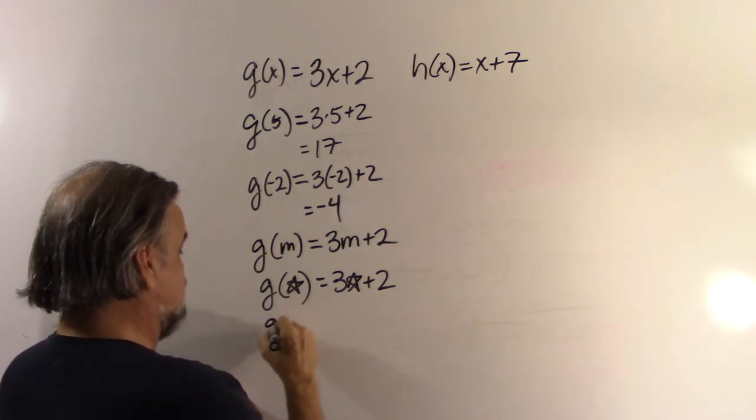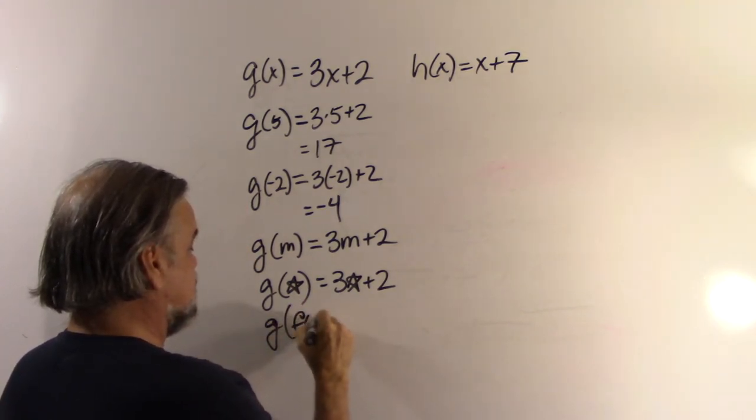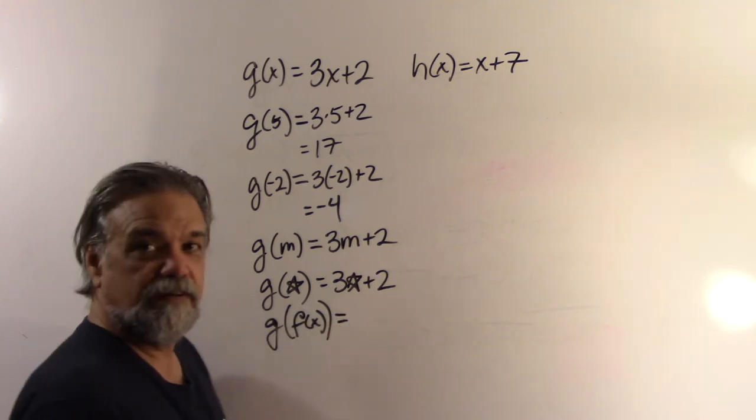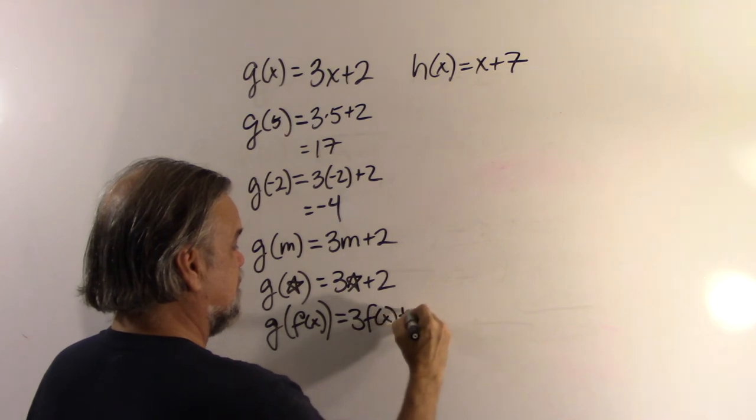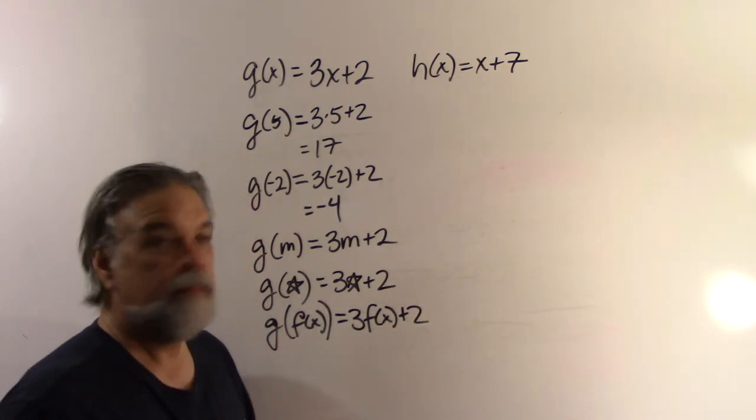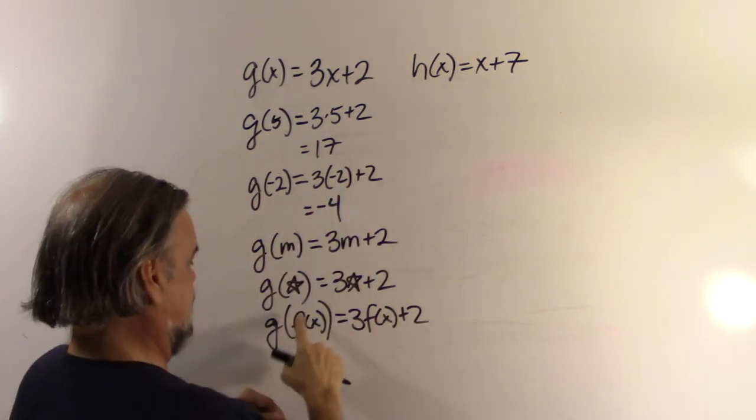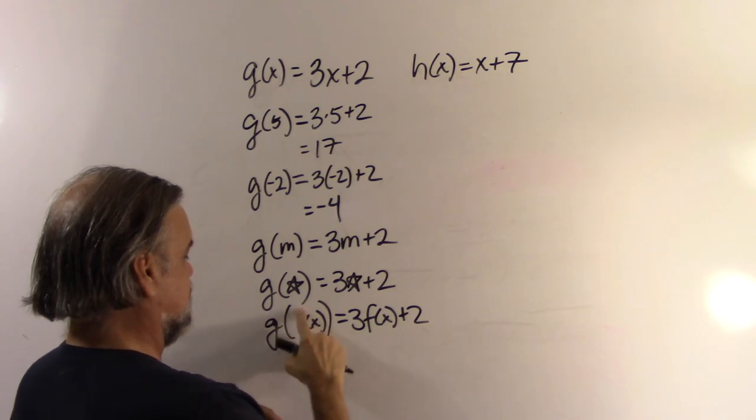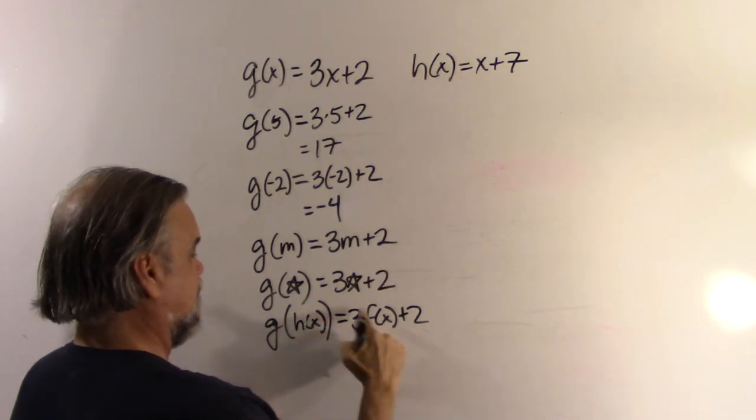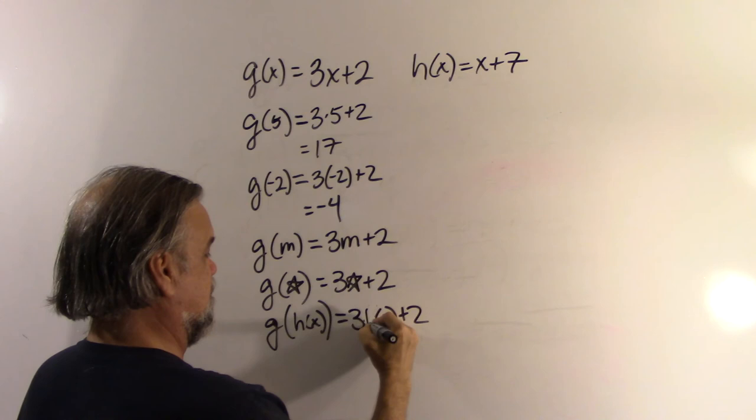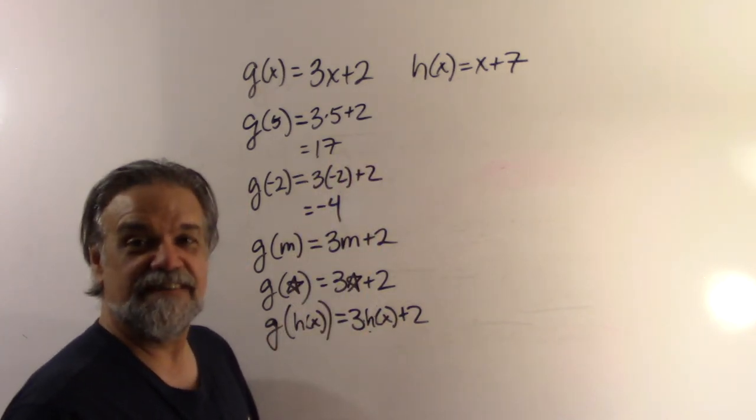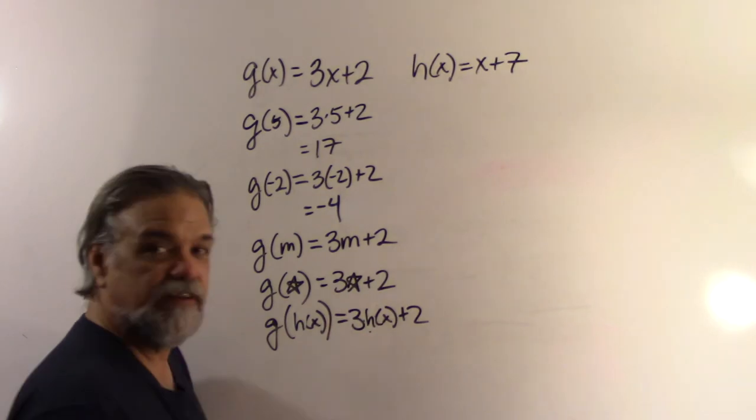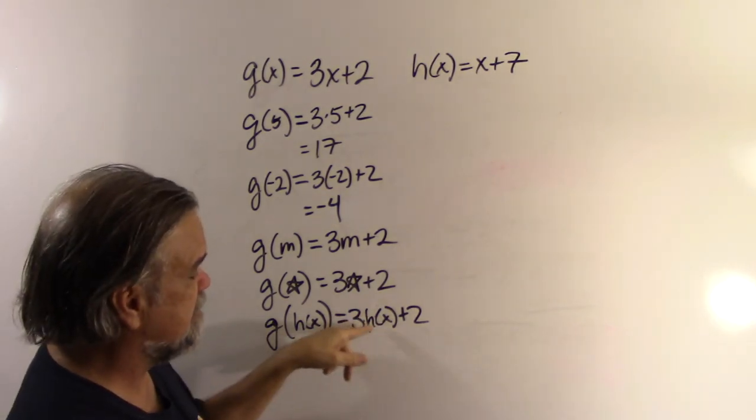And if I had g(h(x)), well, I would have 3 times h(x) plus 2. Oh, but I know what, sorry, not f(x), h(x). I forgot what I named it. There we go.